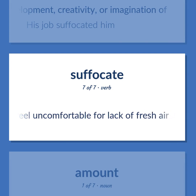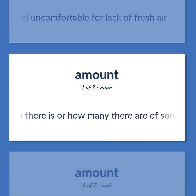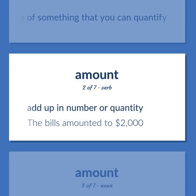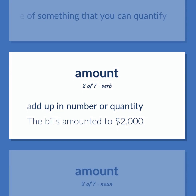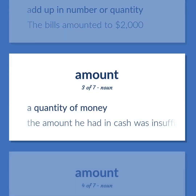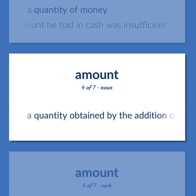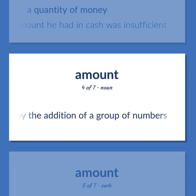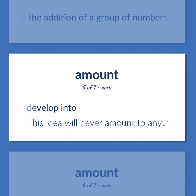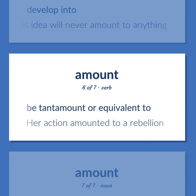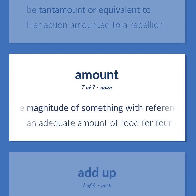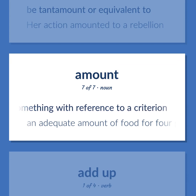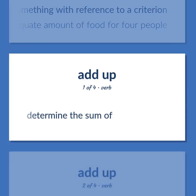Feel uncomfortable for lack of fresh air. How much there is or how many there are of something that you can quantify. Add up in number or quantity. The bills amounted to $2,000. A quantity of money. The amount he had in cash was insufficient. A quantity obtained by the addition of a group of numbers. Develop into. This idea will never amount to anything. Be tantamount or equivalent to. Her action amounted to a rebellion. The relative magnitude of something with reference to a criterion. An adequate amount of food for four people. Determine the sum of.